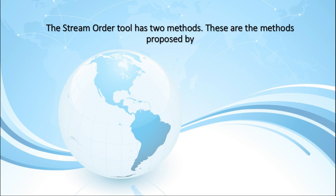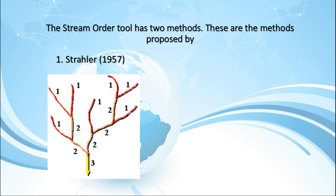The Stream Water Tool has two methods. In the Strahler Method, all links without any tributaries are assigned an order of one and are referred to as first-order. The stream order increases when streams of the same order intersect. Therefore, the intersection of two first-order links will create a second-order link, the intersection of two second-order links will create a third-order link, and so on.